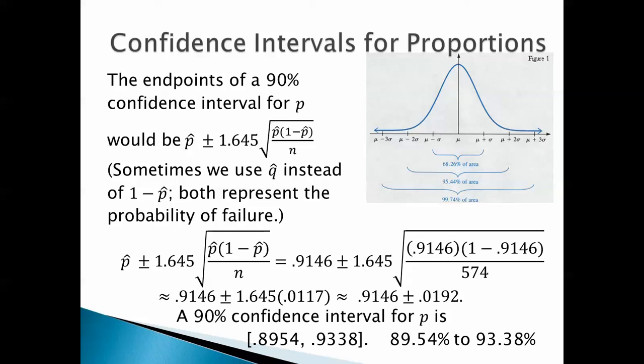As decimals, a 90% confidence interval for p would be 0.8954 and 0.9338. But if we want it as a percentage, then a 90% confidence interval would be 89.54% to 93.38%. So we are 90% sure that the true percentage of girls born to parents who use XSORT would be somewhere between 89.54% and 93.38%.